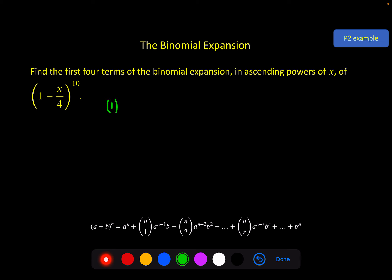So I've got 1^10 plus (10 choose 1), which is 10, times 1^9, times (-x/4)^1, plus (10 choose 2) on my calculator, times (-x/4)^2, and (10 choose 3) we had earlier, is 120, 1^7, (-x/4)^3, and the expansion continues, but I don't need any more of it. I only need the first four terms.